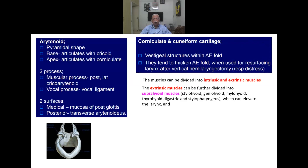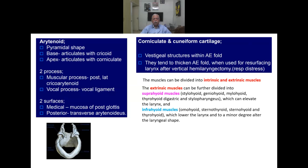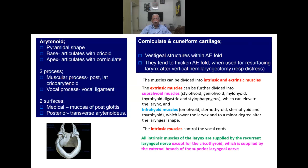The extrinsic muscles are divided into suprahyoid muscles — stylohyoid, digastric, mylohyoid, thyrohyoid, and stylopharyngeus — which elevate the larynx, and infrahyoid muscles — omohyoid, sternohyoid, sternothyroid — which depress the larynx. The intrinsic muscles mainly control the vocal cords. All intrinsic muscles of the larynx are supplied by the recurrent laryngeal nerve, except the cricothyroid, which is supplied by the external branch of the superior laryngeal nerve.